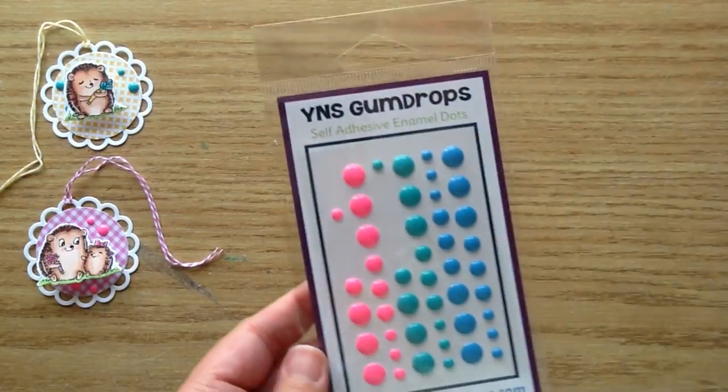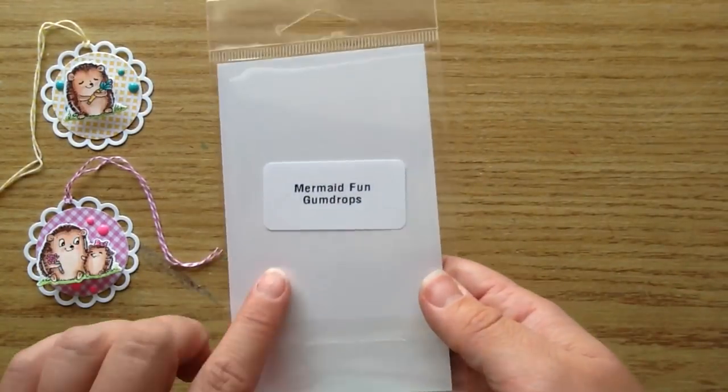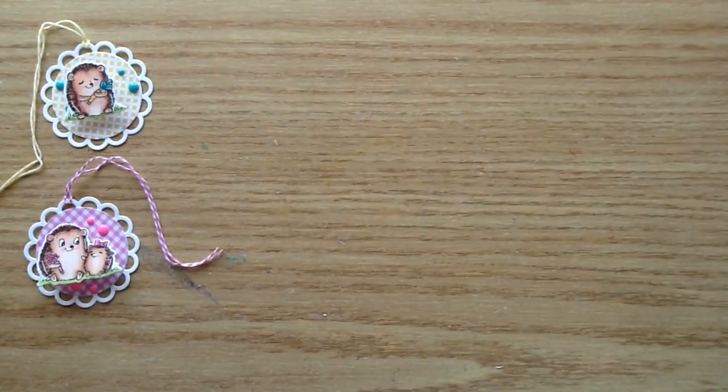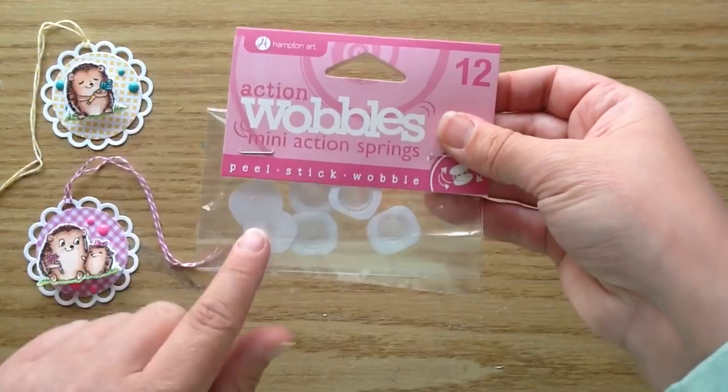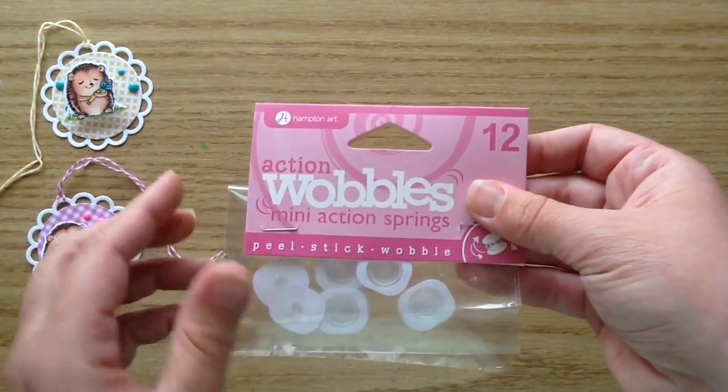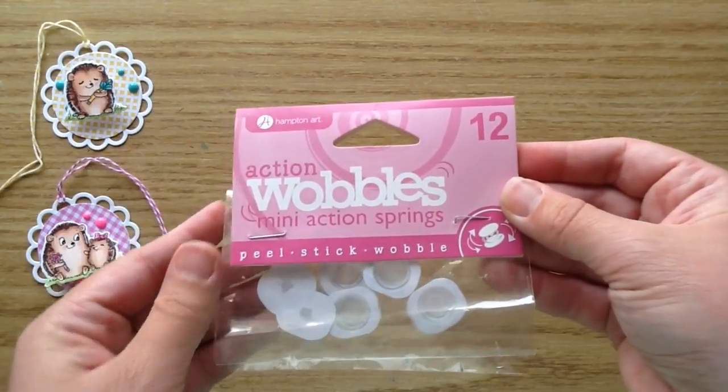Then I used the super cute Your Next Stamp gumdrops. This one is the mermaid fun gumdrops. I love these hot pink ones. You get teal and some nice blue as well in that collection. These are the action wobblers and I use the mini action one so they're smaller. You get 12 in a pack. They're by Hampton Art.